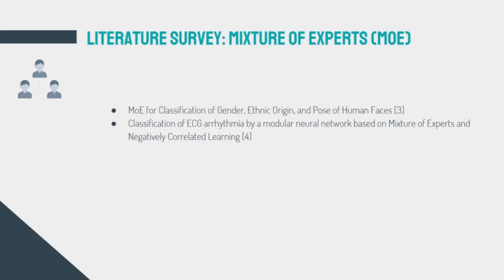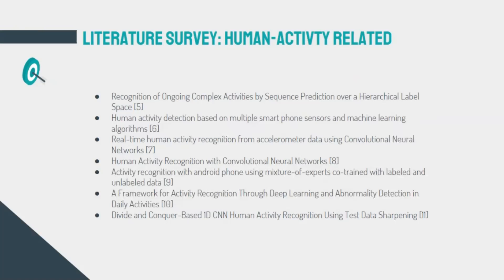The last part of our literature survey was concerned with papers that generally speak about human activities. These papers introduced us to many approaches and provided more insight on the problem, including classification from smartphone sensory data, real-time classification using convolutional neural networks, divide-and-conquer approaches, mixture of expert approaches, and the usage of deep learning for activity classification in general.